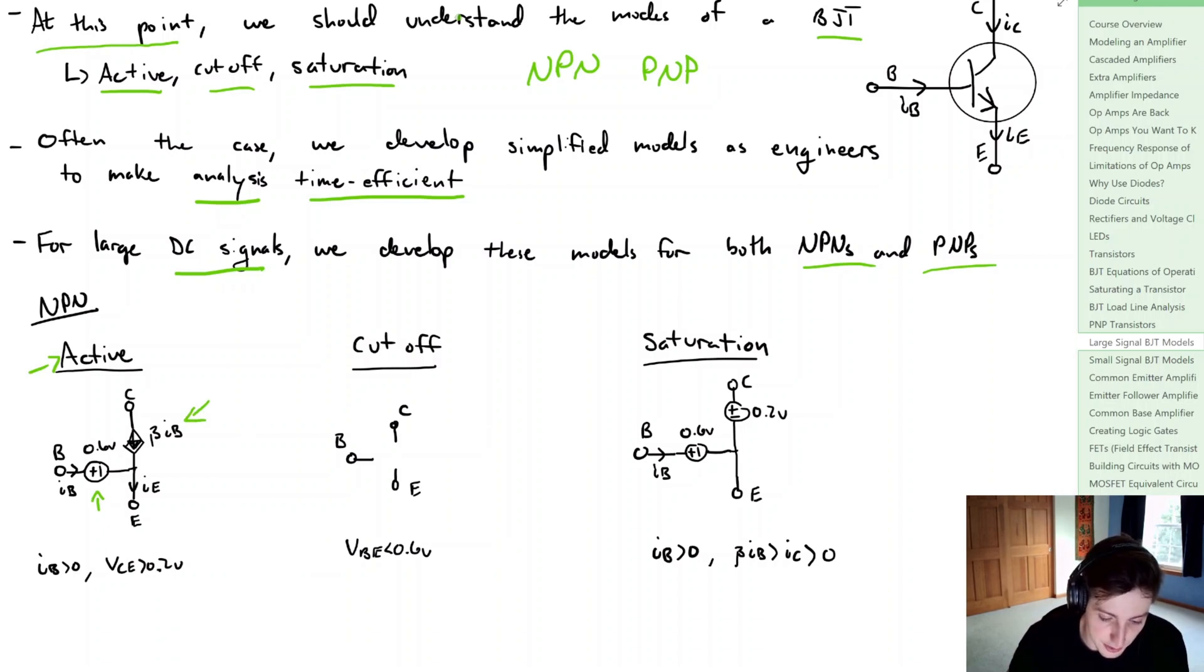If we're in the cutoff mode, we know that the base current is equal to zero, the collector current is equal to zero, and that would mean the emitter current is also equal to zero. That's our pretty basic model for the cutoff mode.